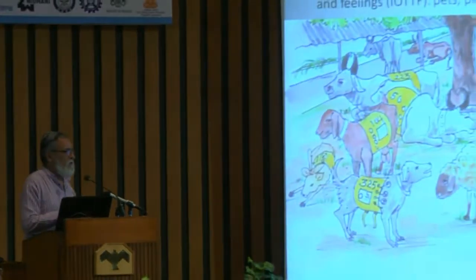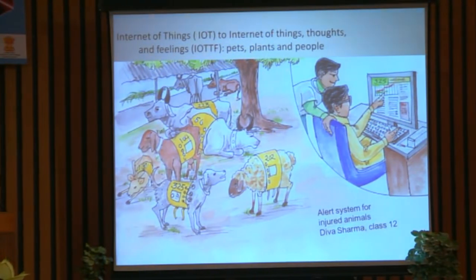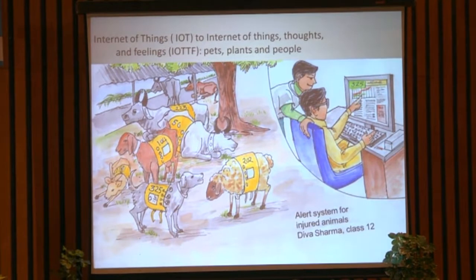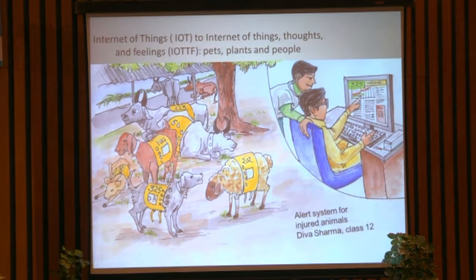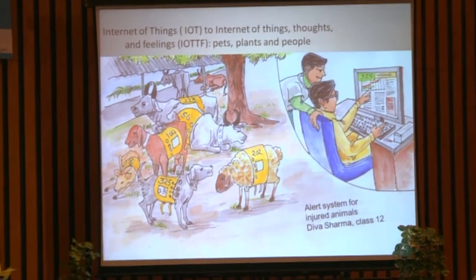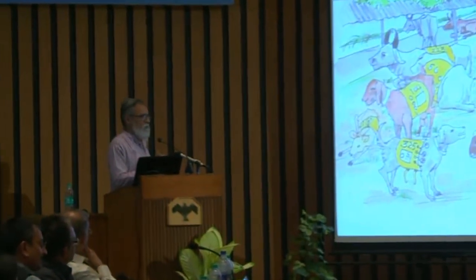I was once talking to Cisco R&D people and they said the future is IoT. I said no — the future is IoTTF: Internet of Things, Thoughts, and Feelings. A girl sent us a small idea that when pets get stressed, she should get a message. We said yes — pets get stressed, plants get stressed, and grandparents get stressed when I can't spend time with them. Pets, people, and plants all need to communicate. These are not just things; there are feelings and thoughts involved, so we need to evolve the IoT movement in a very humane, compassionate direction.